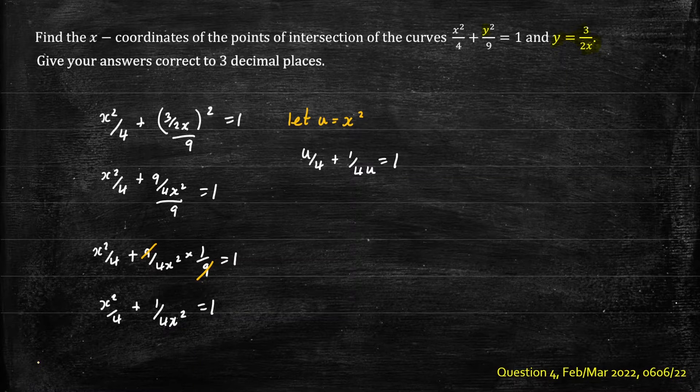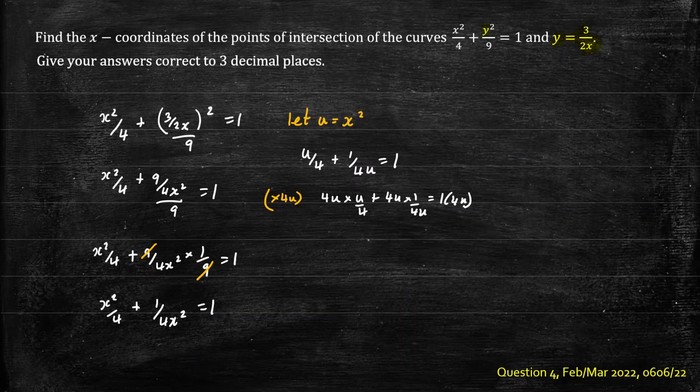Now we'll eliminate the denominators by multiplying the equation by 4u. So we have 4u times u on 4 plus 4u times 1 on 4u equals 1 times 4u. You can cancel the 4 here and cancel 4u.